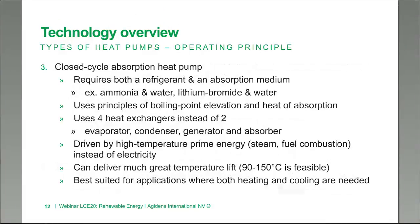The third type is the closed cycle absorption heat pump. In an absorption heat pump you use not only a refrigerant but also an absorption medium — for instance ammonia and water, or lithium bromide and water. These are two common types of medium used. The closed cycle absorption heat pump uses the principle of boiling point elevation and heat absorption, and uses four heat exchangers instead of two: an evaporator, a condenser, a generator, and an absorber. These systems are driven by high-temperature prime energy, which could be steam or fuel combustion — thermal energy rather than electric energy.